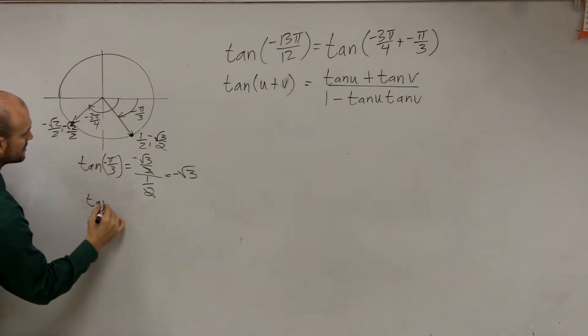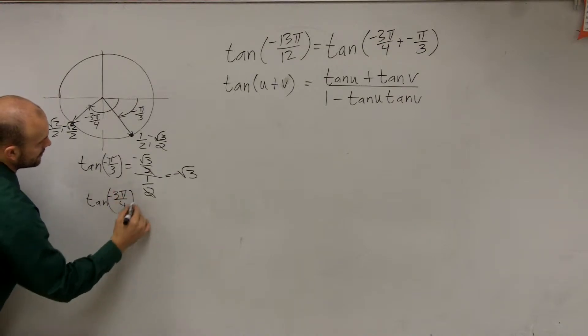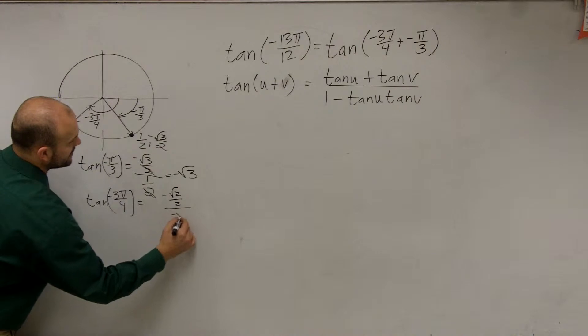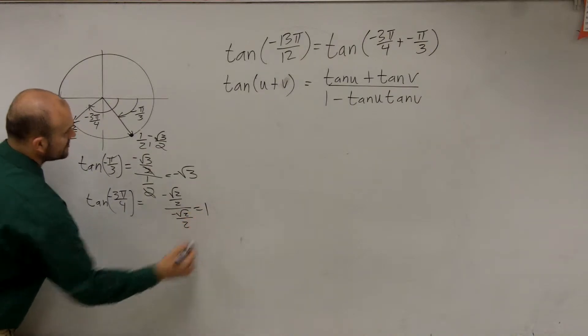The tangent of negative 3π over 4 is equal to negative square root of 2 over 2 divided by negative square root of 2 over 2, which equals 1.